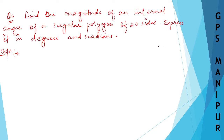What we have is a polygon of 20 sides. A polygon looks like this — 1, 2, 3, 4, 5, 6, 7, 8, 9, 10, 11, 12 — like this, it is of 20 sides.